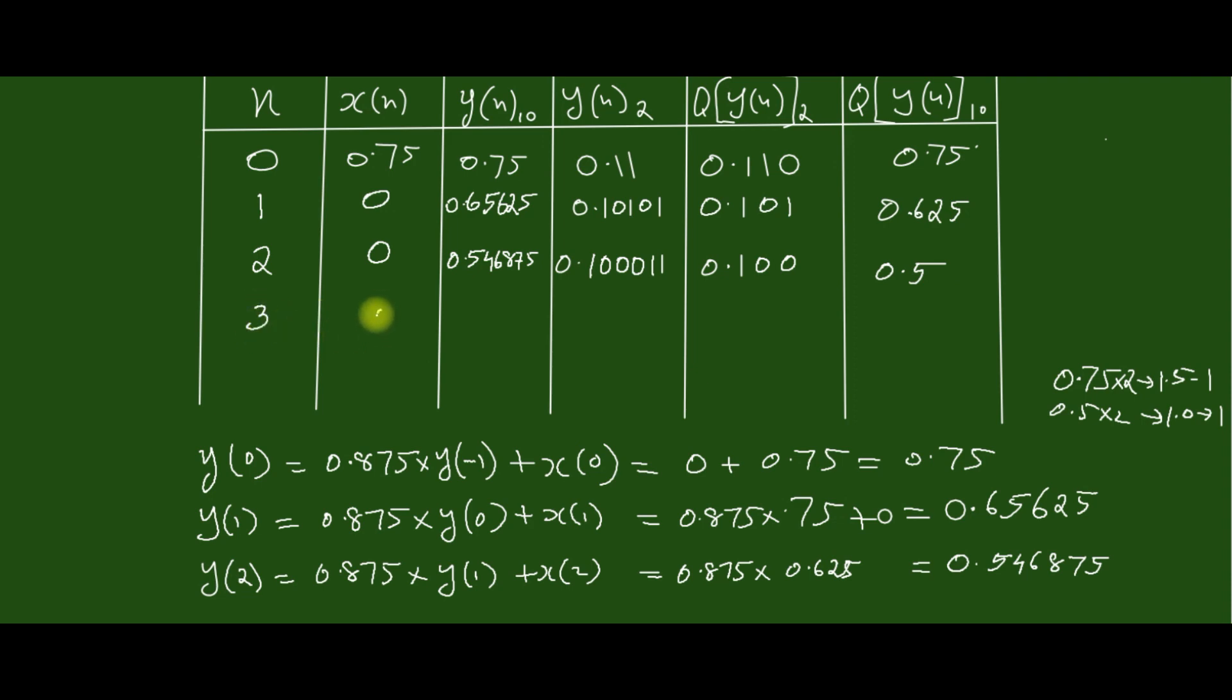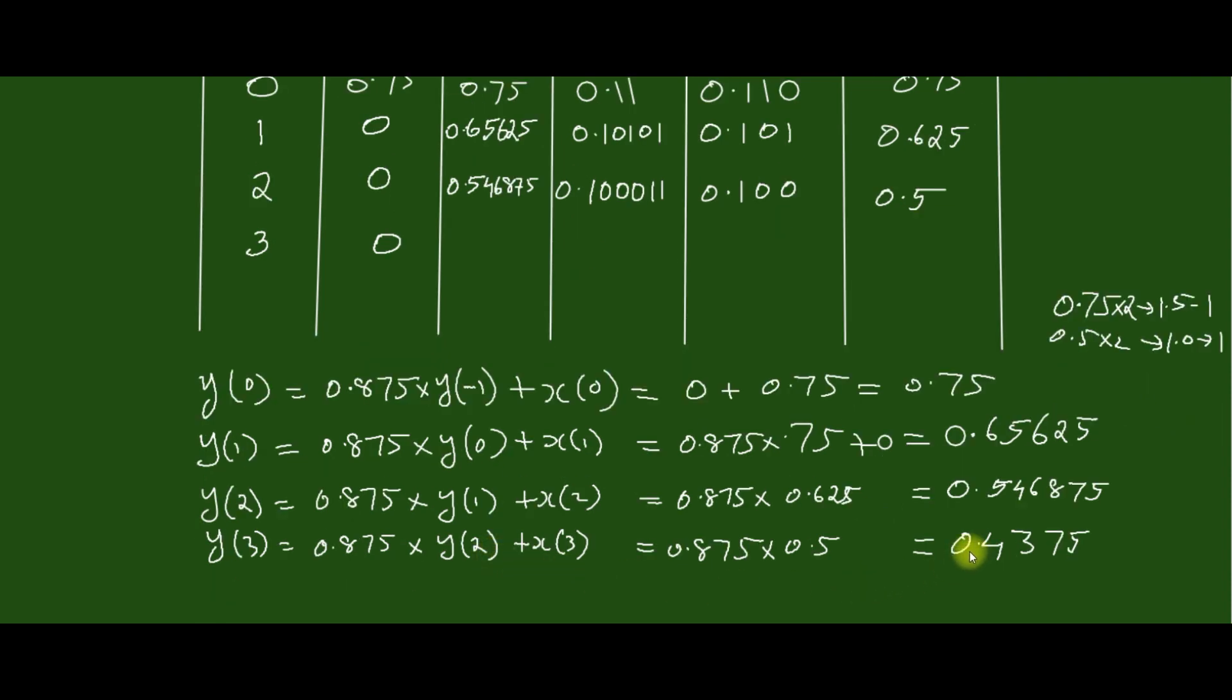Next, when n = 3, x(n) = 0, then y(3) = 0.4375. The corresponding binary is 0.0111. Now rounding, we get 0.100. Here the fourth bit, which is 1, has to be added for rounding. So when we add this one, it will become 0.100. Continuing the computation, we can see that the same thing will be repeating, so it enters into a limit cycle.